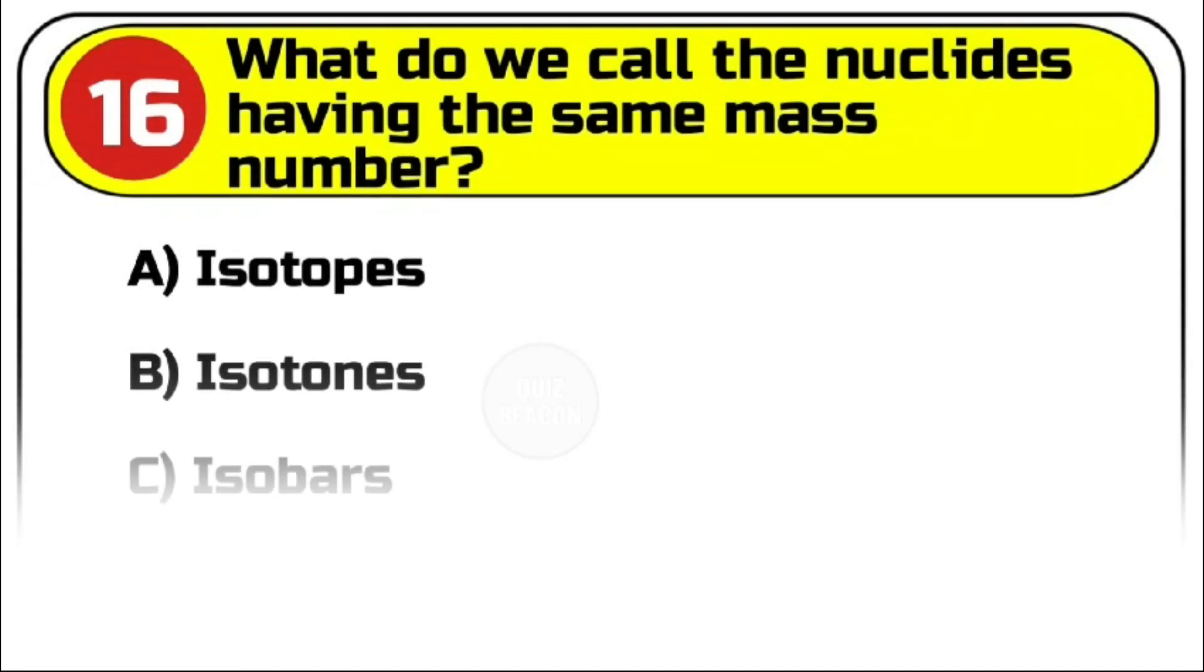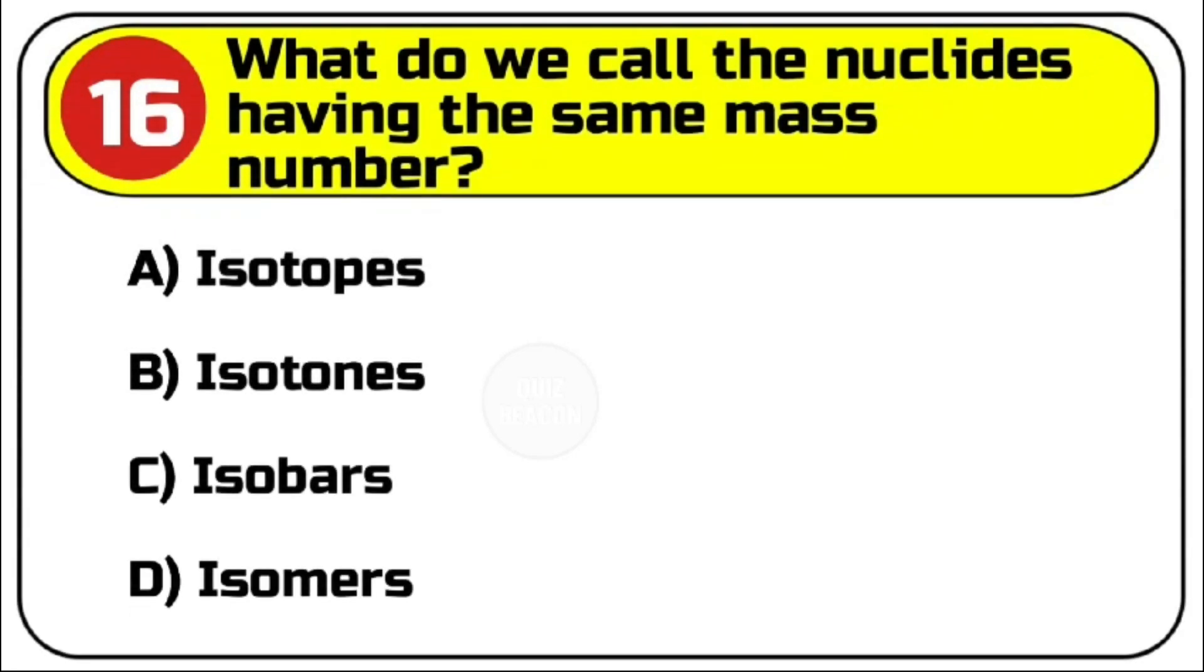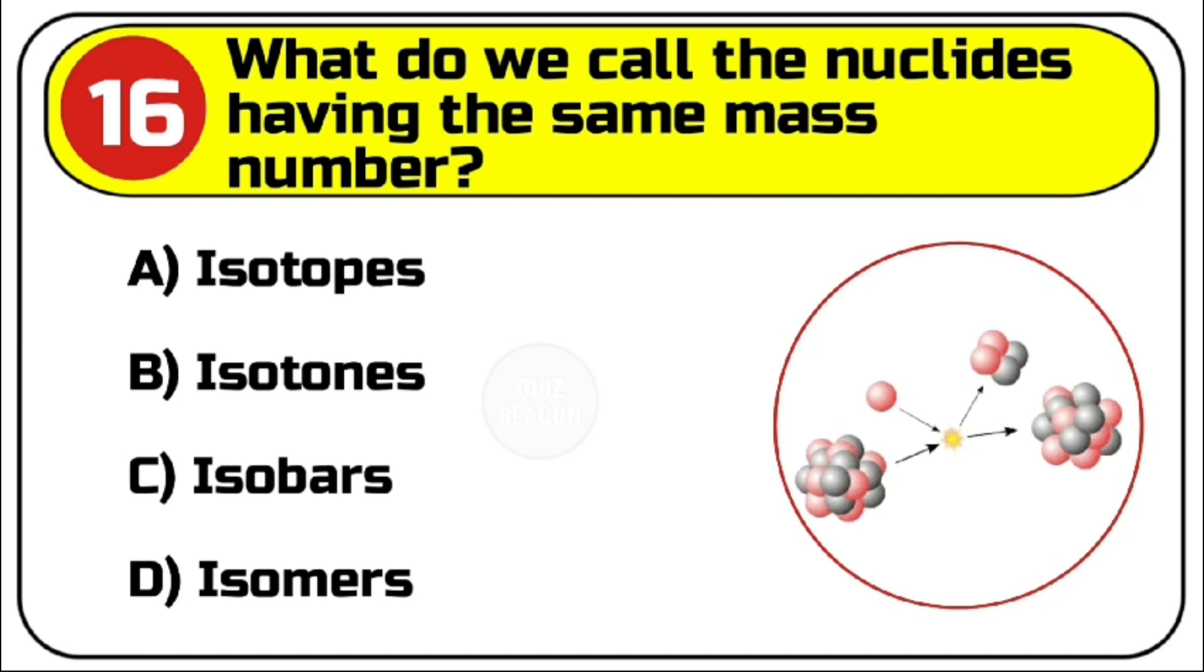Question number 16. What do we call the nuclides having the same mass number? Options are A. Isotopes. B. Isotones. C. Isobars. D. Isomers.